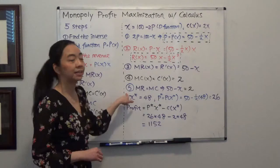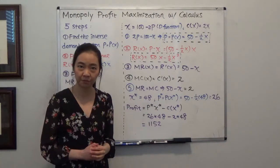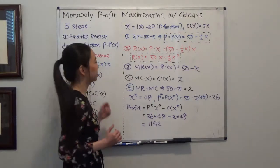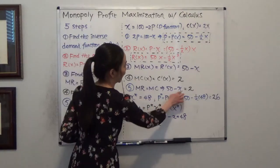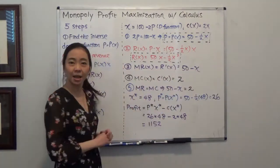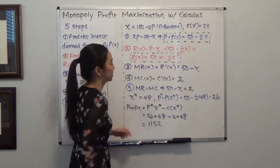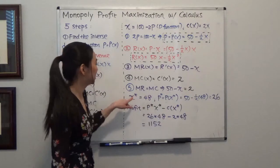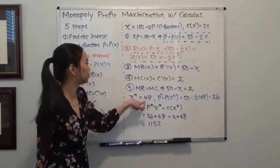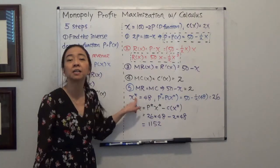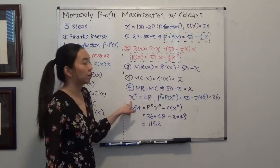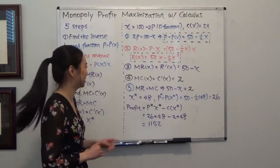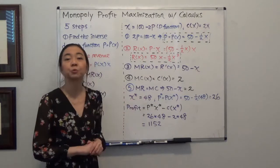Now the fifth step is to set marginal revenue equal to marginal cost to maximize profit. My marginal revenue is 50 minus x, and my marginal cost is 2. So 50 minus x equals 2, which means x equals 48. This is the profit-maximizing quantity, x-star, which is equal to 48.